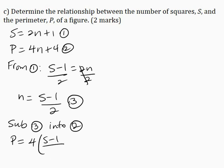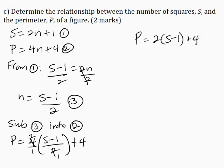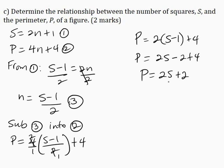Substituting N = (S − 1) / 2 into P = 4N + 4: P = 4 × (S − 1)/2 + 4. Simplifying, P = 2(S − 1) + 4, so P = 2S − 2 + 4. Therefore, the relationship between P and S is P = 2S + 2.